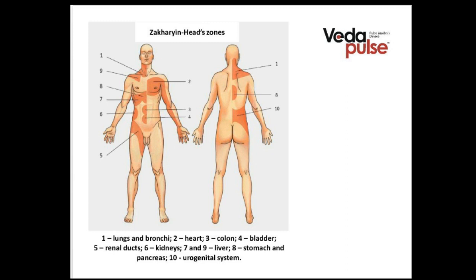You can see the projection areas and projection zones according to the ideas of Zakharyin and Head. For the large intestine channel, the projection area according to the Zakharyin-Head system is located over the navel and looks like a circle the size of the patient's fist — like a fist placed over the navel. That is how to find the projection area of the large intestine channel according to this system.